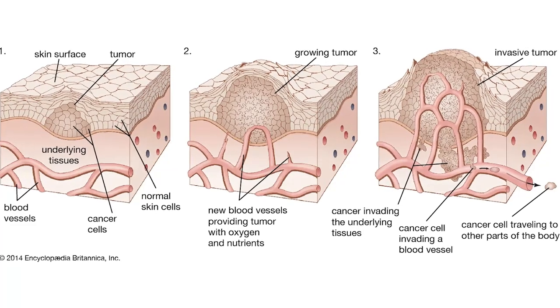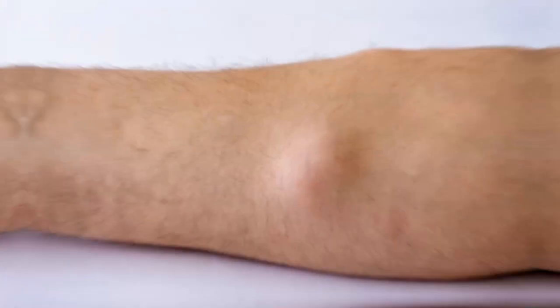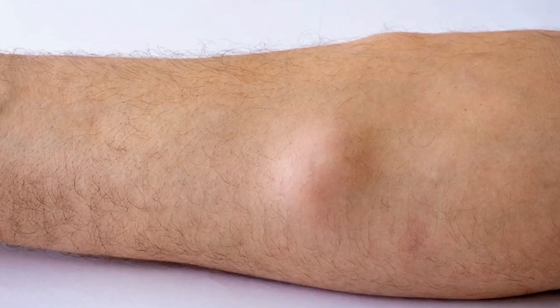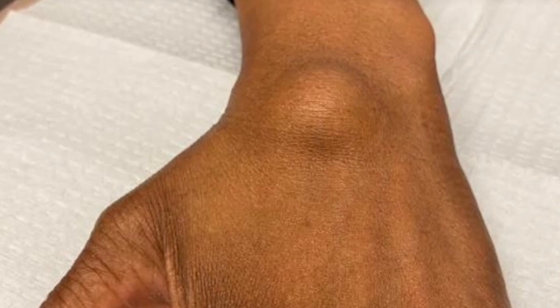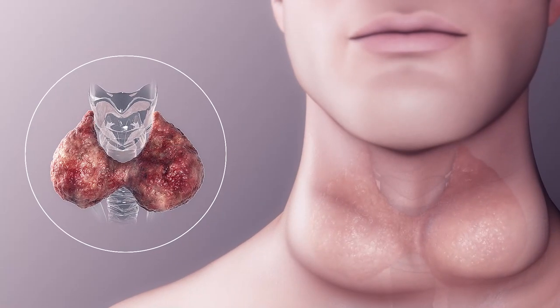And remember the tissue growth we mentioned earlier? Well, some conditions take that a bit too far, like acromegaly. In this condition your body decides to supersize certain areas, including your hands and wrists. This extra bulk can push on the median nerve, leading to carpal tunnel.